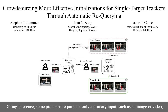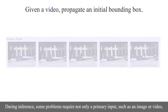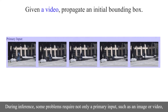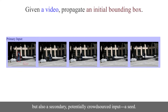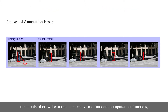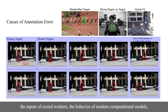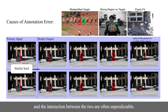During inference, some problems require not only a primary input, such as an image or a video, but also a secondary, potentially crowdsourced input — a seed. While an accurate seed and predictable performance is typically assumed, the inputs of crowd workers, the behavior of modern computational models, and the interaction between the two are often unpredictable.